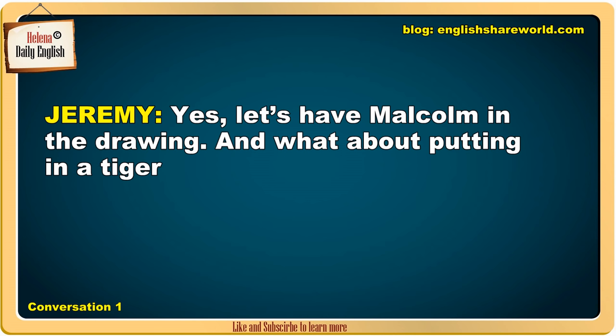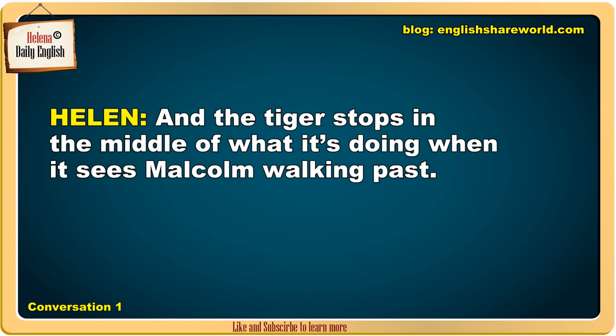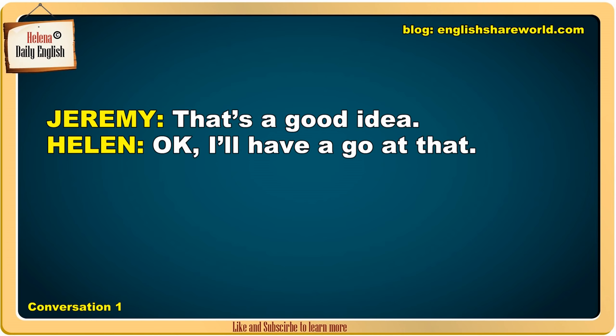Yes, let's have Malcolm in the drawing. And what about putting in a tiger — the one that he makes friends with a bit later? Maybe it could be sitting under a tree, washing itself. And the tiger stops in the middle of what it's doing when it sees Malcolm walking past. That's a good idea. OK, I'll have a go at that.